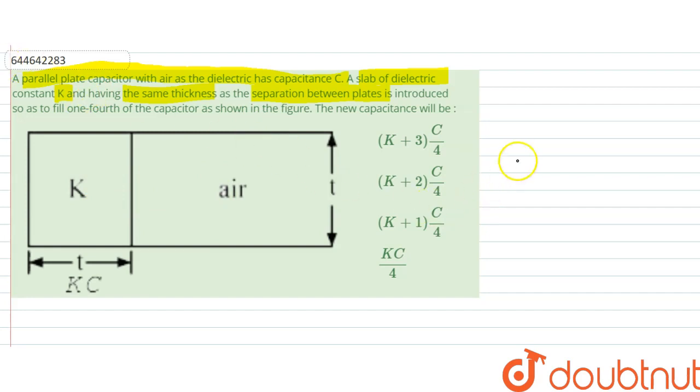For that, capacitance is equal to epsilon A by d, right, for air initially.